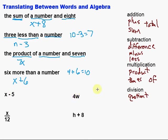Let's take a look at this one. Four W would be four times W, or the product of four and W.